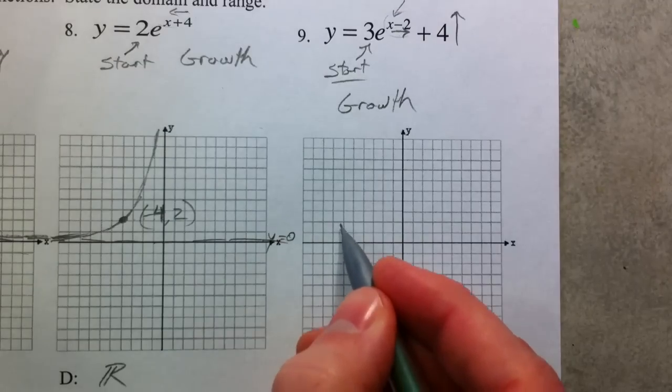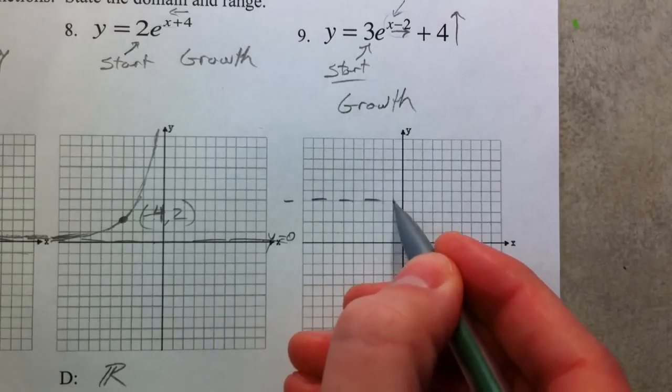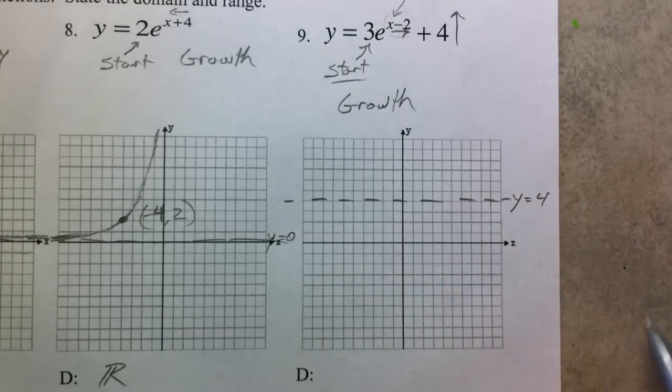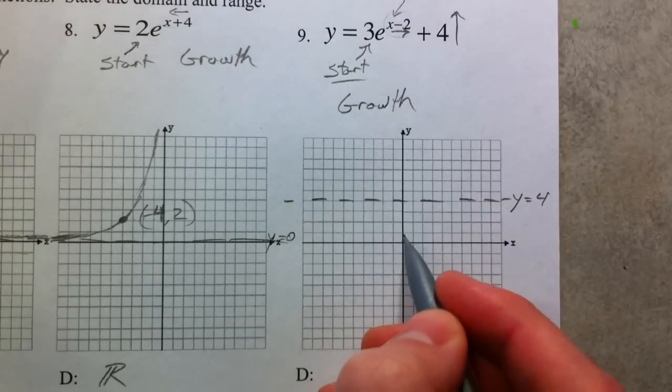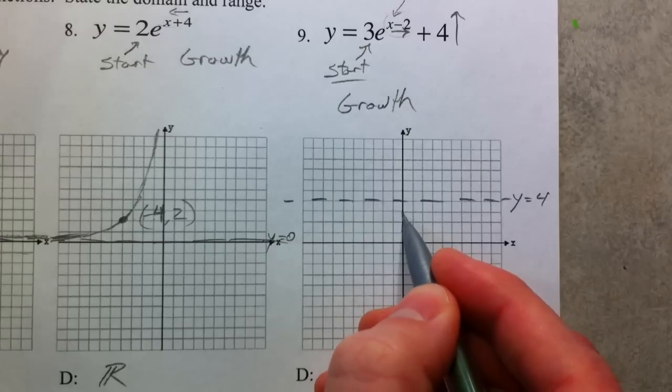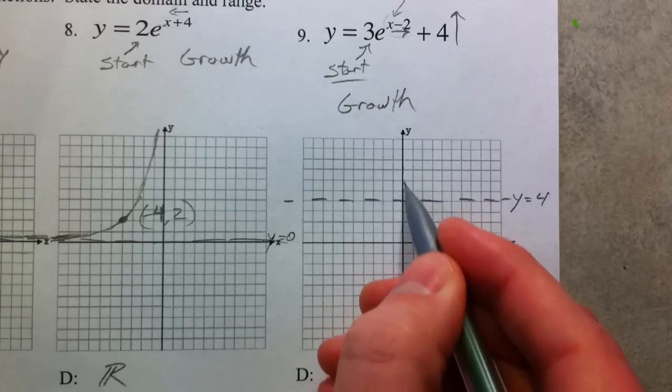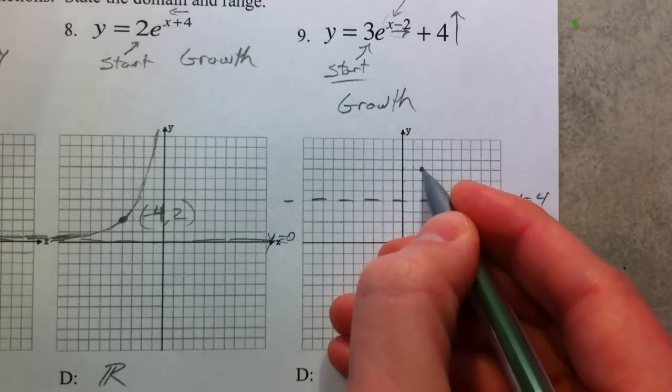And so we go up 1, 2, 3, 4. That's where our horizontal asymptote is now. y equals 4. Our starting value is at 3, 1, 2, 3 is where it was. But it also shifted up 1, 2, 3, 4. So notice that it's still 3 above our horizontal asymptote.